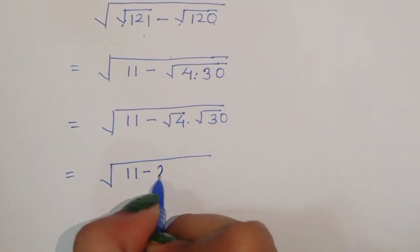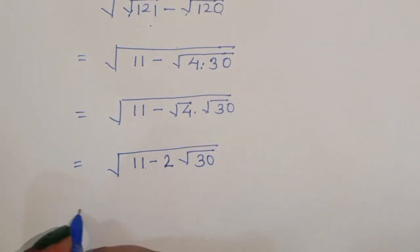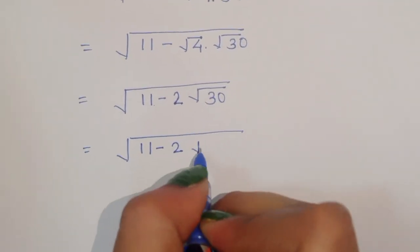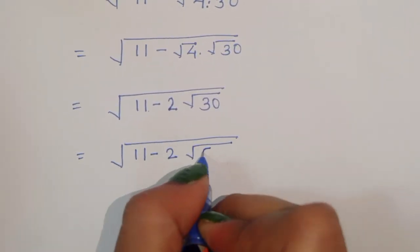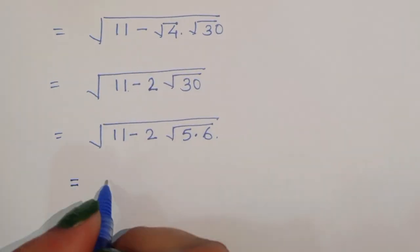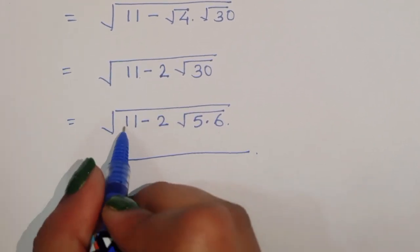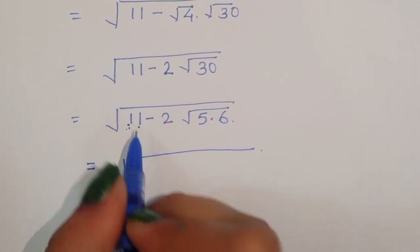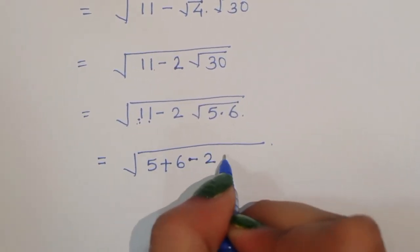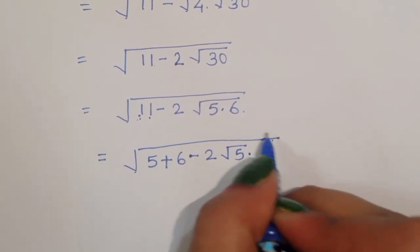So we have √(11 - 2√30). Now 30 we can write as 5 times 6. And 11 we can write as 5 plus 6. So this becomes √(5 + 6 - 2√(5 × 6)), and we are separating this out.